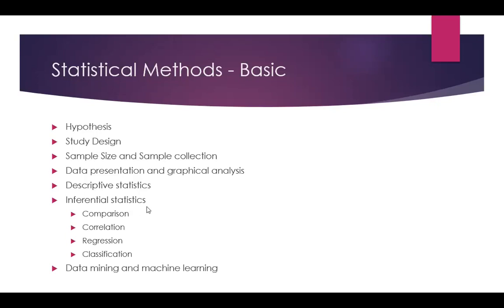Then there is inferential statistics. In inferential statistics, we often compare two groups. For example, we can compare the efficacy of a particular drug given to patients. We divide patients into two groups — in the first group, we prescribe the medication, and to the second group we prescribe a placebo. A placebo means a common salt which has no medicinal value. We do not tell patients whether they are receiving medicine or common salt, and then we calculate whether there is a difference between the groups.